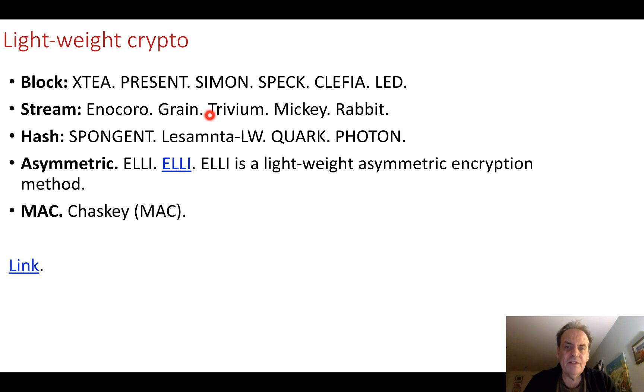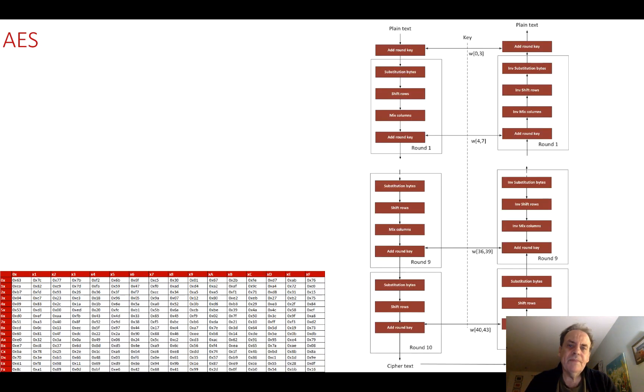For hashing, we need to use alternative methods—PHOTON, QUARK, and so on—our lightweight crypto hashing methods. Then there's one asymmetric method, ELLI, which allows a public and a private key to be used. We can also have MAC functions for our lightweight cryptography.